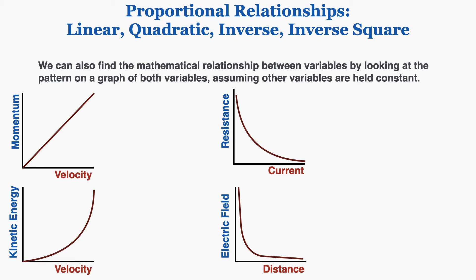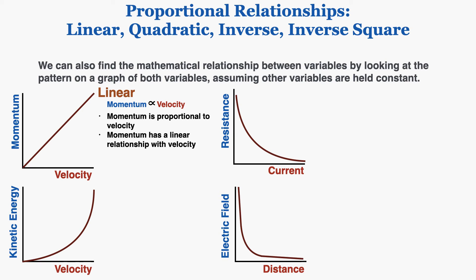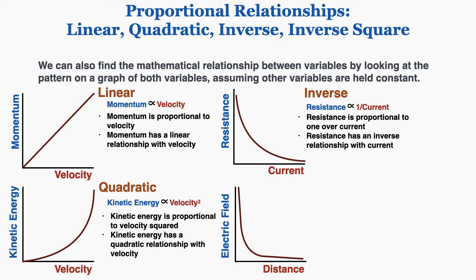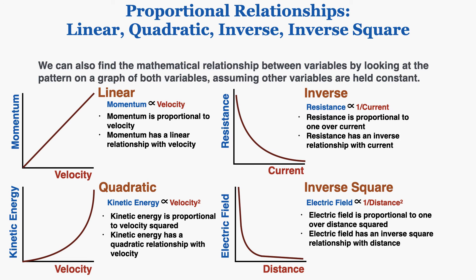We can also find the mathematical relationship between variables by looking at the pattern on a graph, assuming other variables are held constant. A linear graph of momentum versus velocity tells us momentum is proportional to velocity. A quadratic graph of kinetic energy versus velocity tells us kinetic energy is proportional to velocity squared. An inverse graph of resistance versus current tells us resistance is proportional to 1 over current. And an inverse square graph of electric field versus distance tells us the electric field is proportional to 1 over distance squared.